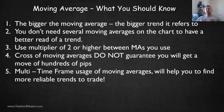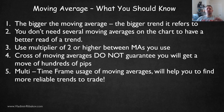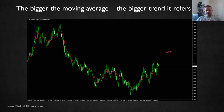Here are several things you need to know about the moving average before you start using it, and each of them I will explain separately in depth. The bigger the moving average, the bigger the trend it refers to. You do not need several moving averages on the charts to have a better read of the trend. Use a multiplier of two or higher between the moving averages you use in case you use more than one. Cross of moving averages do not guarantee you any huge moves of 100 or thousands of pips. And, very importantly, multi-timeframe usage of moving averages will help you find more reliable trends to trade.